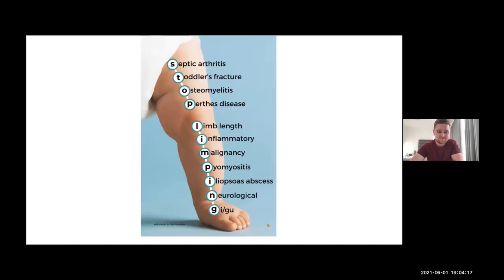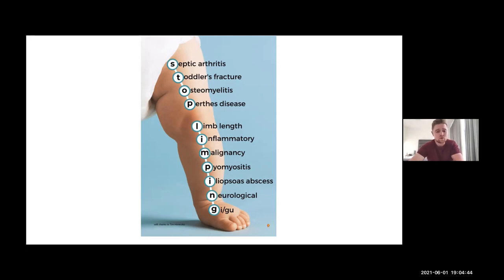A useful mnemonic for common causes of limping children is STOP LIMPING: Septic arthritis, Toddler's fracture, Osteomyelitis, Perthes disease, Limb length discrepancy, Inflammatory causes such as transient synovitis, Malignancy, Pyomyositis, Iliopsoas abscess, Neurological causes, and bowel or genitourinary causes. The most commonly examined are septic arthritis, transient synovitis, Perthes disease, and developmental dysplasia of the hip.